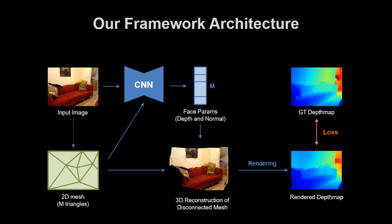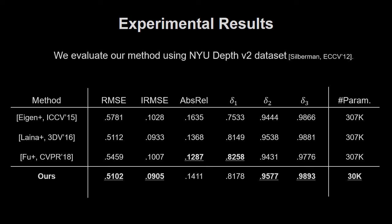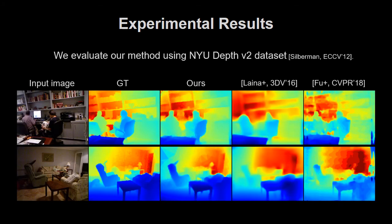We would like to talk about the experimental results of our method. We use NYU Depth V2 data for this evaluation. As a qualitative result, we confirmed that the depth map of our representation has better performance than those of existing pixel-wise deep depth prediction methods. It should be noted that the parameter size for our representation is much less. Moreover, our depth map can reflect object boundaries more clearly than existing deep depth map prediction methods.